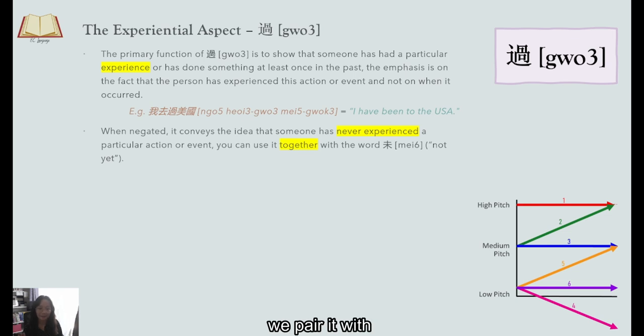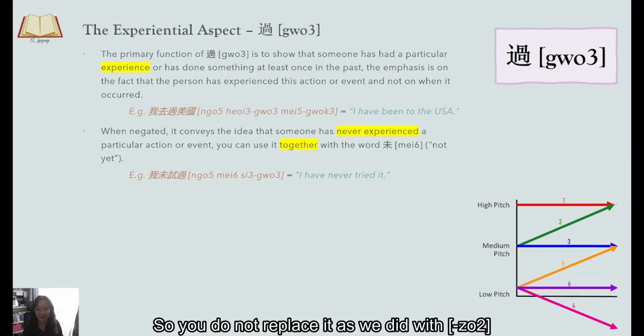Negatively, we pair it with not replace the word 未 as in 我未试过 I have never tried it. As you can see 过 is still used in combination with 未 so you do not replace it as we did with 左